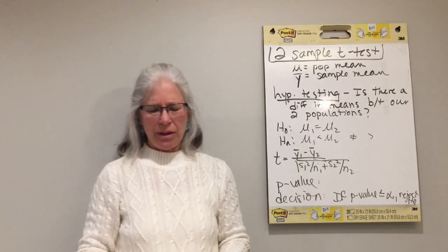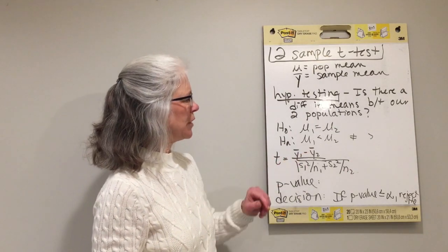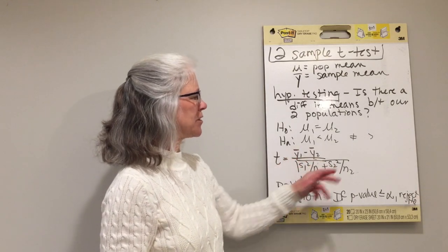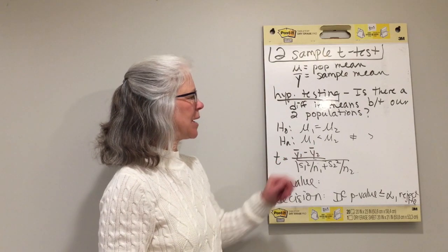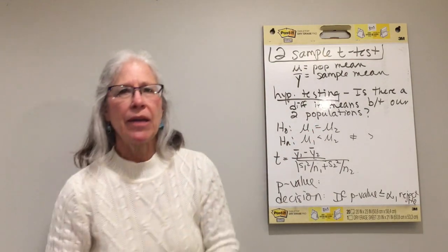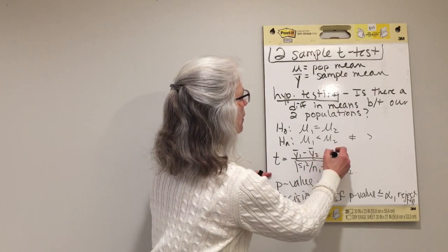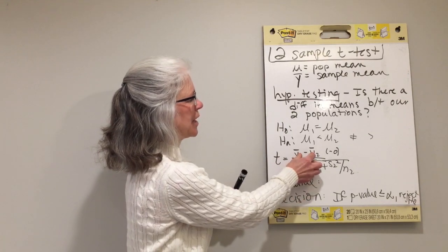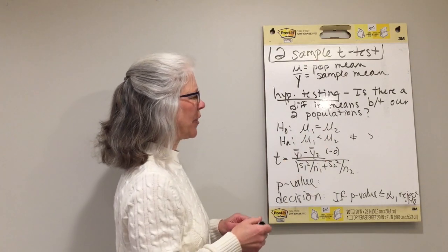Then we'll take samples to see what we think is true. Now we have two groups, so we have two of everything: two sample means, two sample standard deviations, two sample sizes. We want to see how the difference in our sample means compares to our null hypothesis. Our null hypothesis is that there is no difference, so there's an implied minus zero here — how does the difference in our sample means compare to the zero difference we hypothesized?